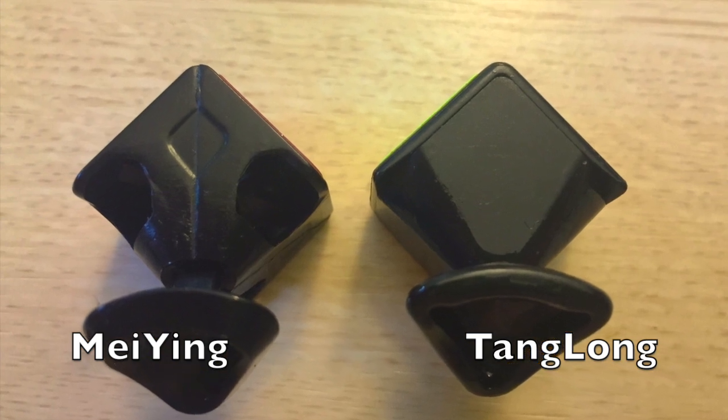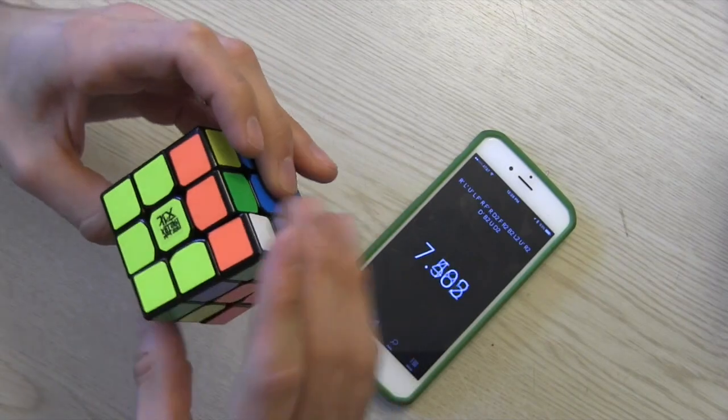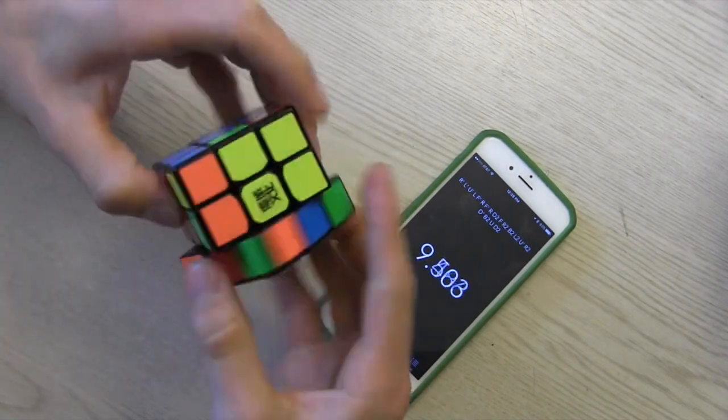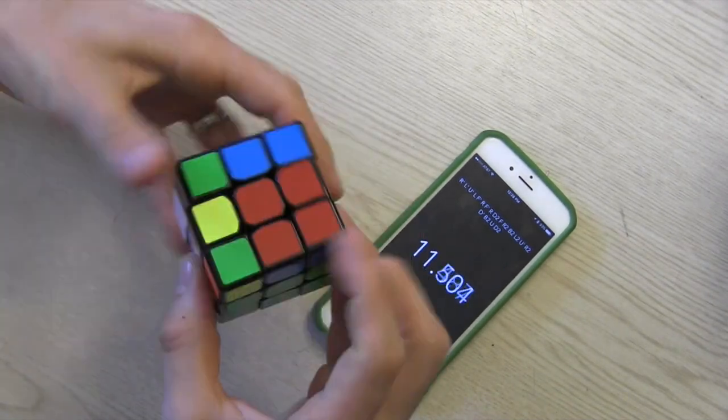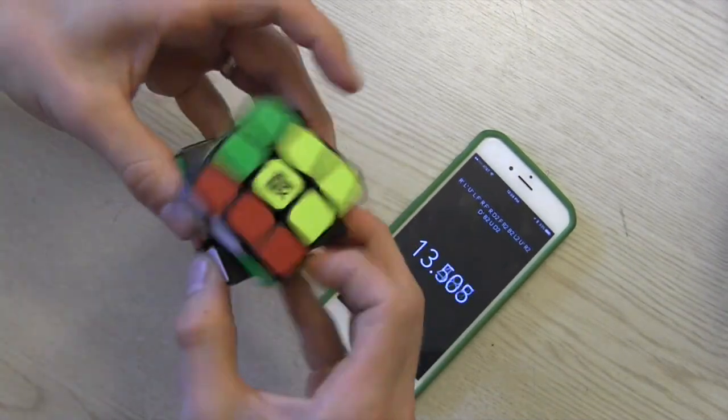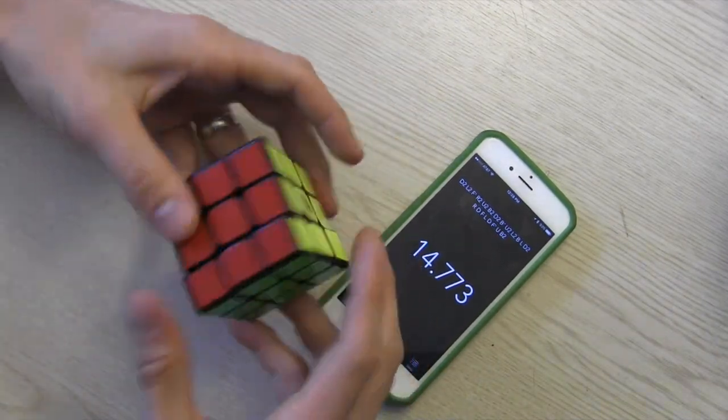The corners are very basic, but hold one major difference between it and the Mei Ying. While the Mei Ying is open and hollow, the caps from the Tang Long keep it feeling more like one solid piece. It is still a very hollow feeling cube compared to that of 356 or older cubes like the Wei Long.